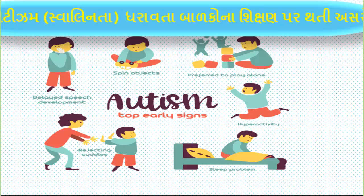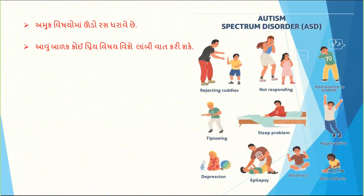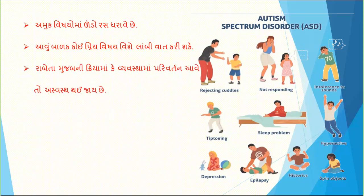ઓટિઝ્મ (Autism) ના પ્રારંભિક ચિહ્નો: બાળક કોઈ વસ્તુ અથવા રમકડું ફેરવ્યા કરે, એકલું રહેવાનું ખૂબ પસંદ કરે. અમુક વિષયોમાં ઊંડો રસ ધરાવે, ચોક્કસ નિત્ય ક્રિયા કે વ્યવસ્થામાં ફેરફાર આવે તો અસ્વસ્થ થઈ જાય, આંખોનો સંપર્ક ટાળે, ઓછો કરે, કે અસંગત રીતે કરે. (Early signs of autism include spinning objects, preferring solitude, intense focus, discomfort with changes, and avoiding eye contact.)